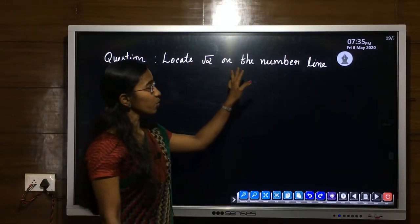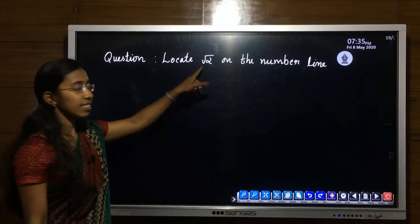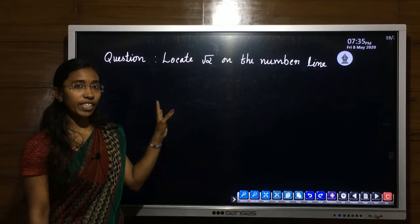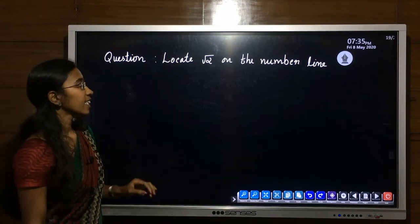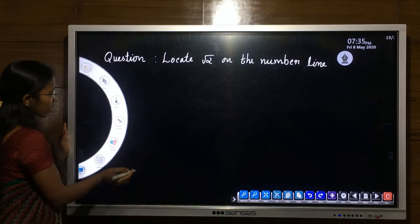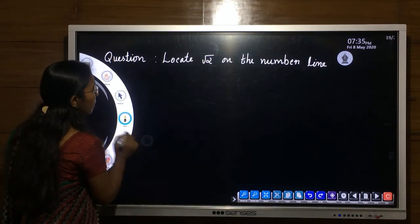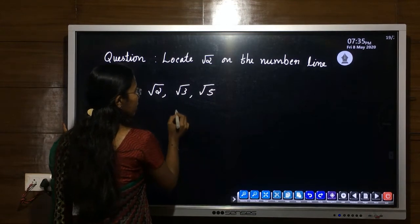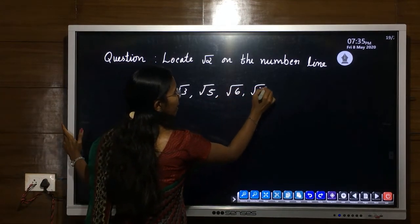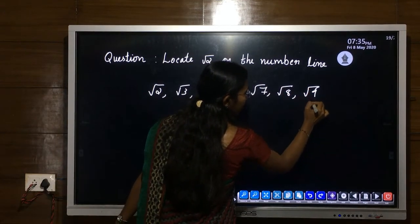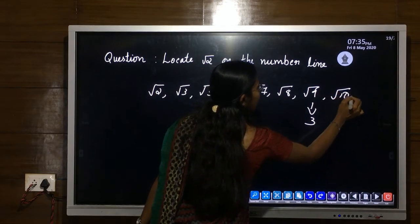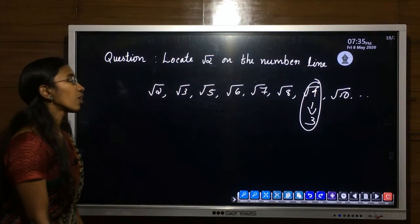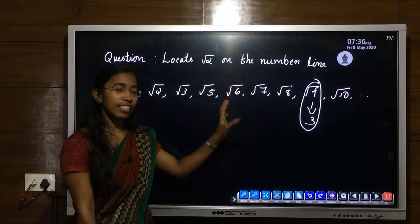Our next question is: locate root 2 on the number line. Root 2 is an irrational number. For numbers like 2, 3, minus 5, or 0, it is very easy to locate them on the number line. But for irrational numbers like root 2, root 3, root 5, root 6, root 7, root 8, root 10 — these are all irrational numbers. So how do we locate these kinds of numbers on the number line?